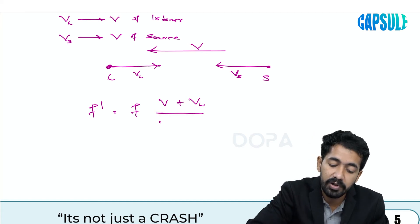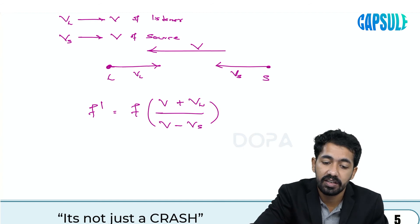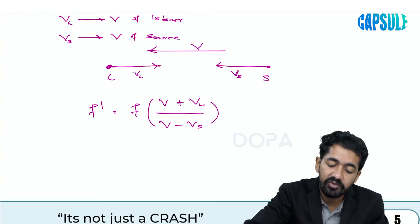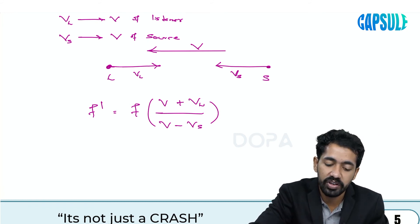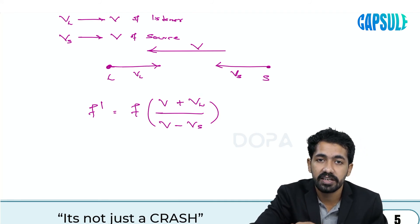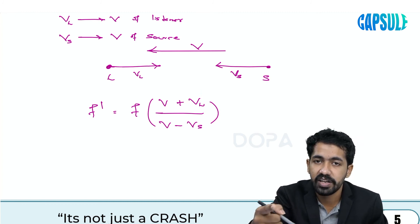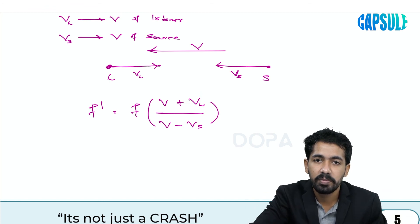The denominator will decrease, which is the case when they are approaching each other. Looking at the arrow marks: v and vl are in opposite directions, so for relative motion you add them — giving v plus vl. For vs, it is in the same direction as v, so you subtract — giving v minus vs. If arrow marks are in the same direction, subtract; if in opposite directions, add.